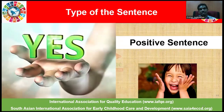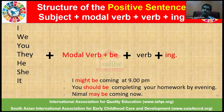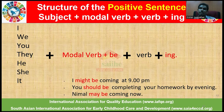Let's go through the positive sentence. The structure of a positive sentence would be: subject plus modal verb plus 'be' plus main verb with ING. For example: 'I might be coming at 9 PM.' 'You should be completing your homework by evening.' 'Vimal may be coming now.' The modal verb in the first sentence is 'might' and the main verb is 'coming'; in the second, the main verb is 'completing'; and in the third, again, 'coming'.